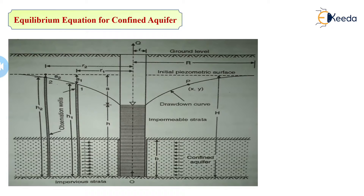In a confined aquifer, there is an initial water level, and there is a final water level after the water is pumped out. The drawdown is denoted by capital S. The final water level is shown by small h, and capital H gives the initial water level or the total length of the aquifer up to the initial water level. We take two observation wells having depths H1 and H2, and drawdowns H1 and H2 respectively.